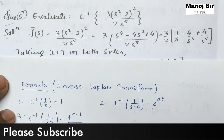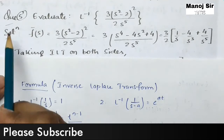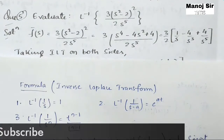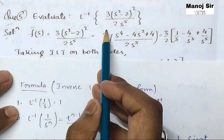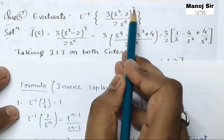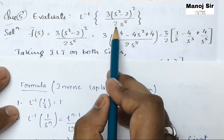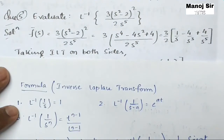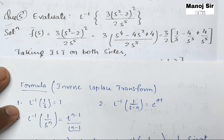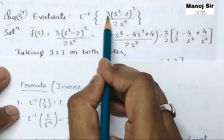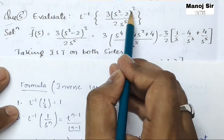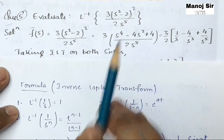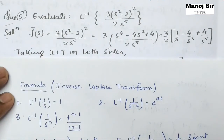Welcome to video number 23. In this video we are going to solve the fifth problem on the topic of inverse Laplace transform. The question is: evaluate or solve the inverse Laplace transform of 3(s² − 2)² divided by 2s⁵. Here, f̄(s) is given as 3(s² − 2)² upon 2s⁵.